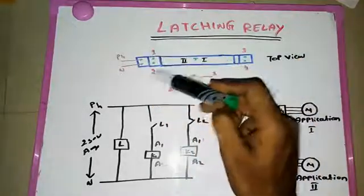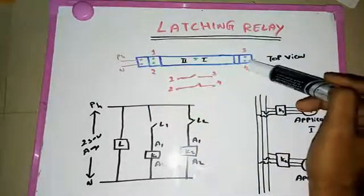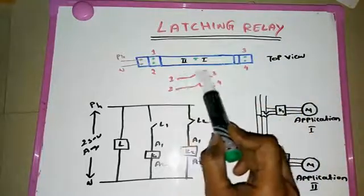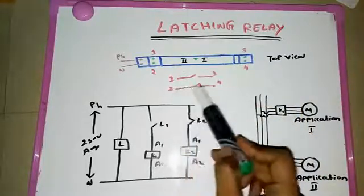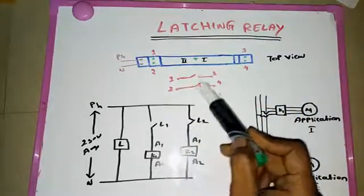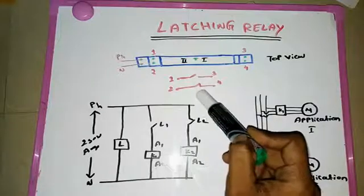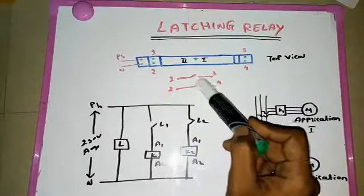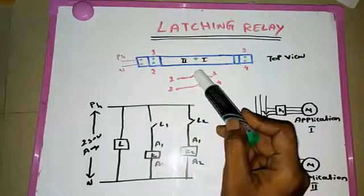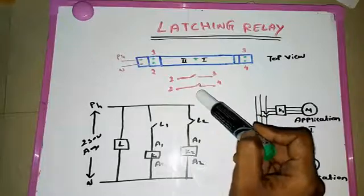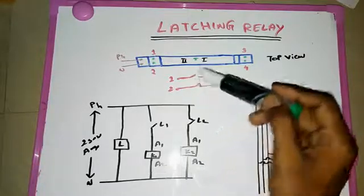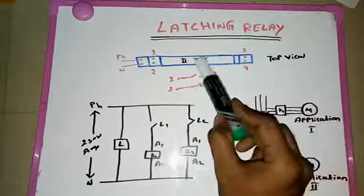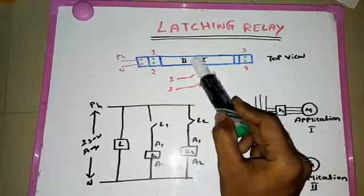The first two terminals are for the auxiliary supply. Terminals one and two, and three and four are the second set. Terminals one and three are for the normally open contact, and two and four are for the normally closed contact. The first coil is operated and the second one is not, and then the second one operates.